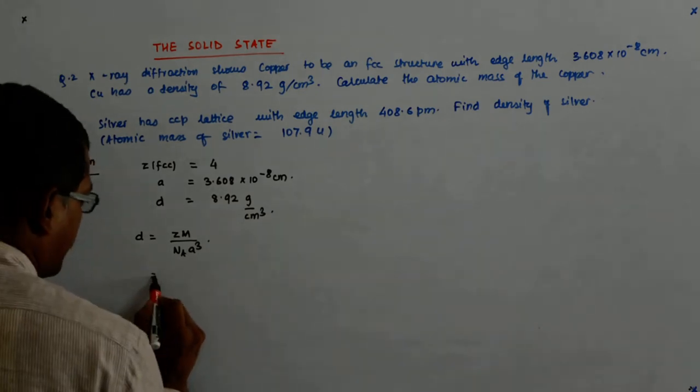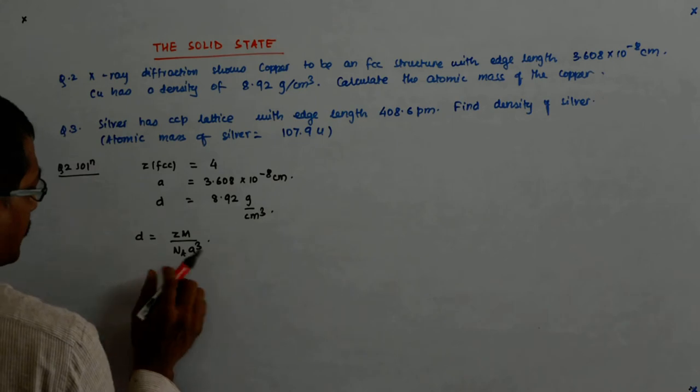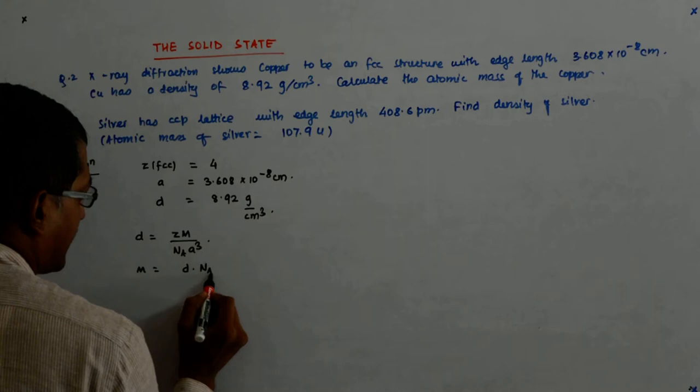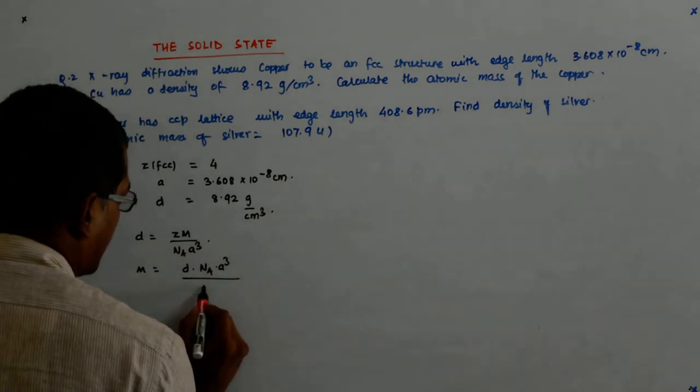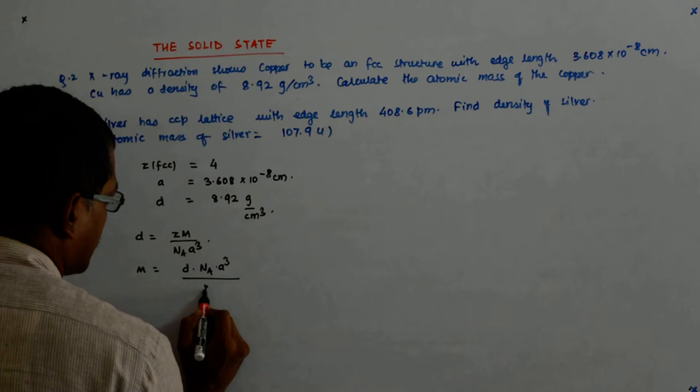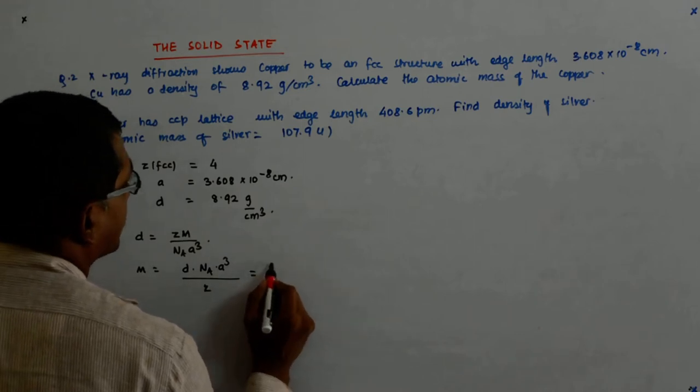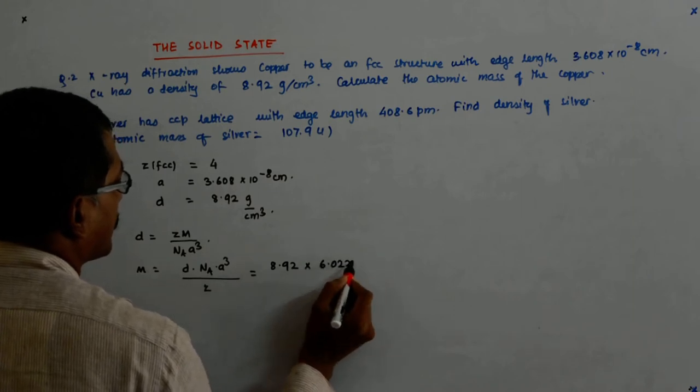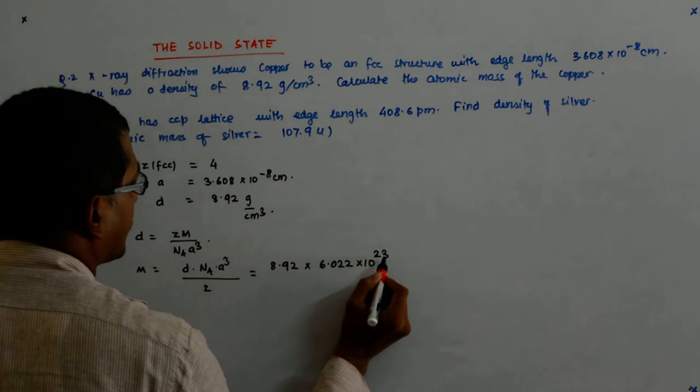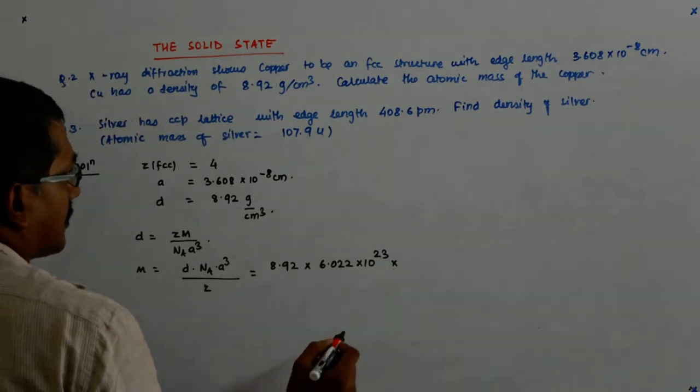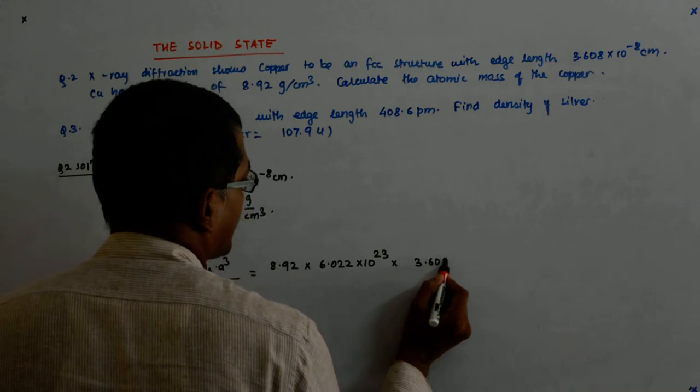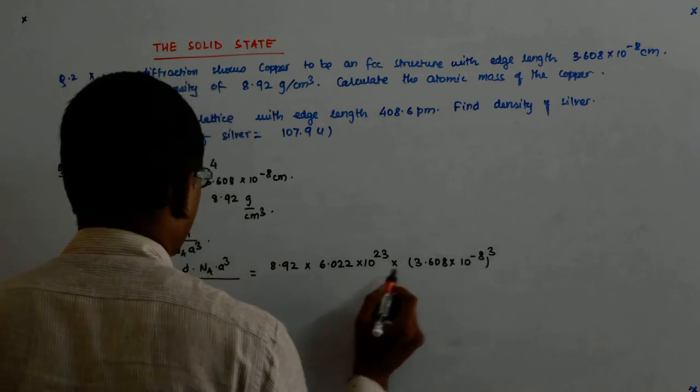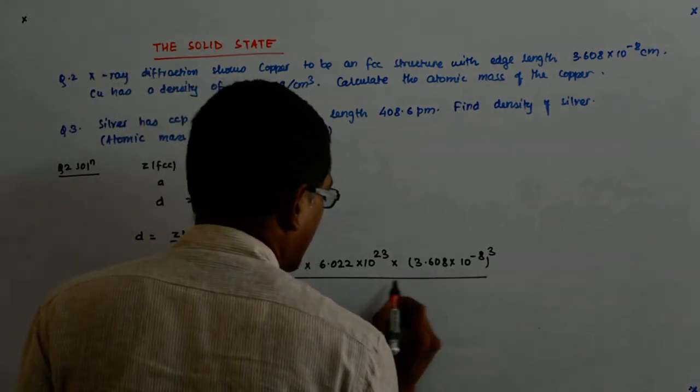I am supposed to find out the atomic mass. So, M is equal to D NA A cube upon Z. So, density is 8.92, 6.022 into 10 to the power 23 into 3.608 into 10 to the power minus 8 whole cube upon 4.